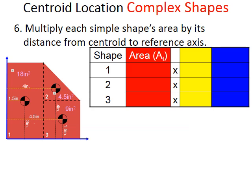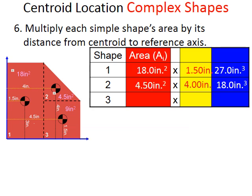Our area for shape one was 18 square inches, our x coordinate was 1.5 inches, and when we multiply those we get 27 cubic inches. Following that same process, we get 18 cubic inches for the triangle and for the square we get 40.5 cubic inches. Now that is just for the x component.